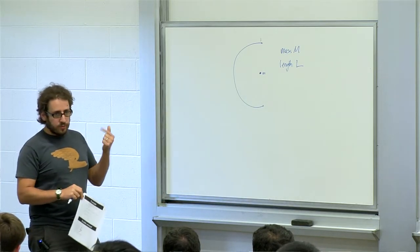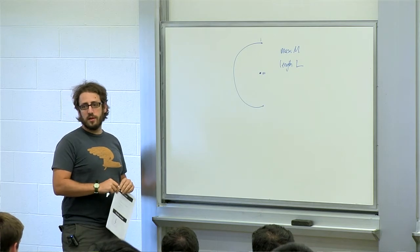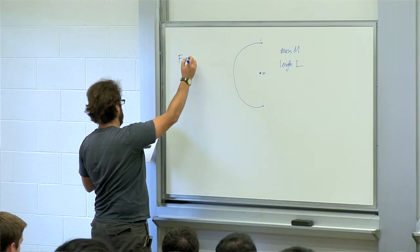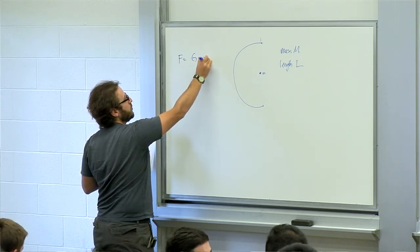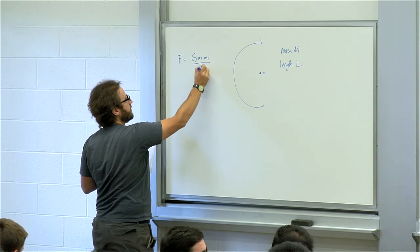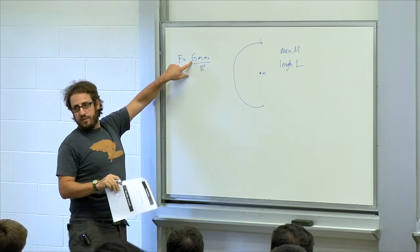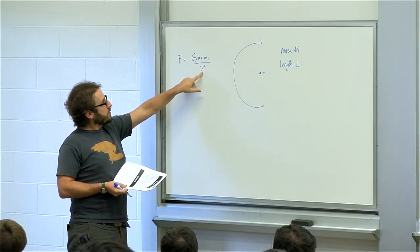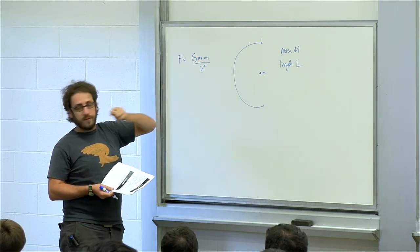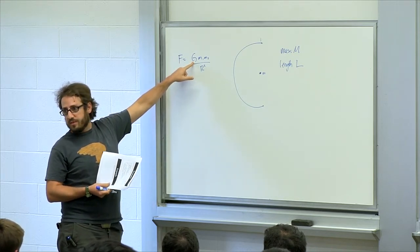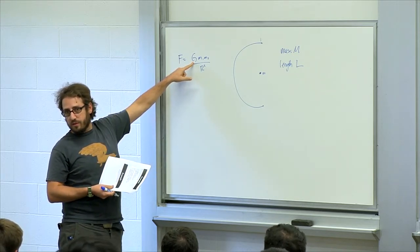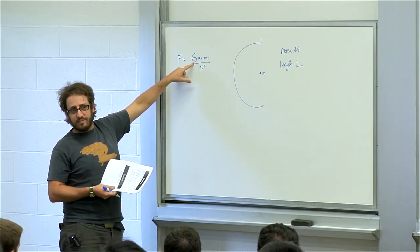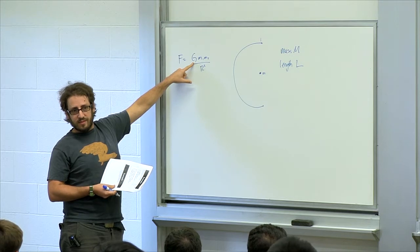If you have two point masses, the force between them is G m1 m2 over r squared. It's proportional to this constant, proportional to each mass, and inversely proportional to the distance squared. How do we know this constant G other than it's in the textbook? That experiment — yeah. How do you measure this one? It's like a laser.